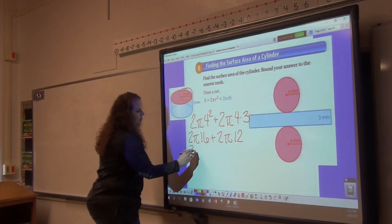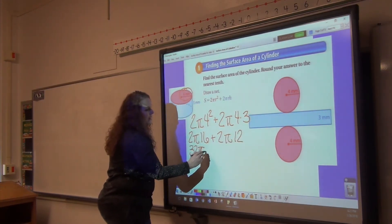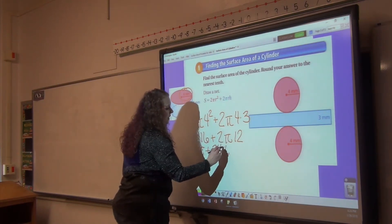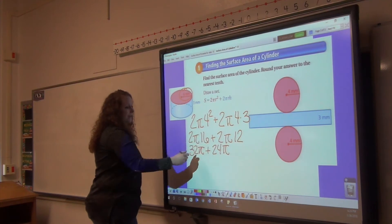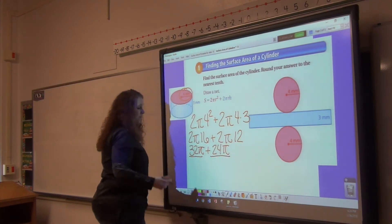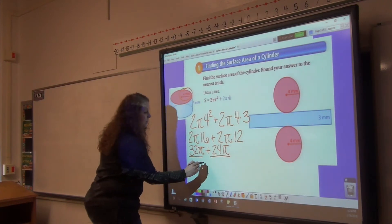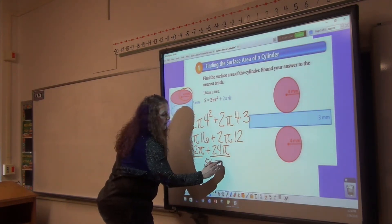All right. 2 times 16 is 32. So we have 32π plus 2 times 12 is 24π. We can combine this together because these are like terms. We've got 32π and 24π, 32 plus 24 is 56π,